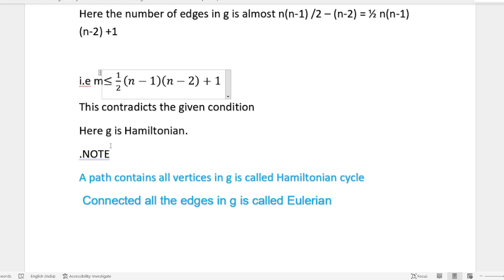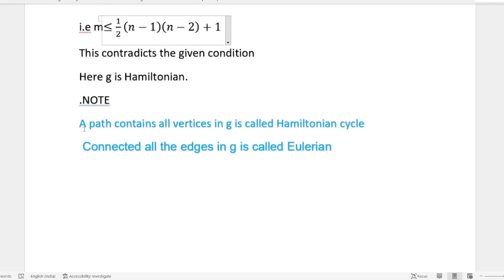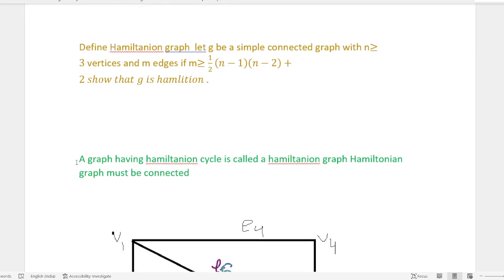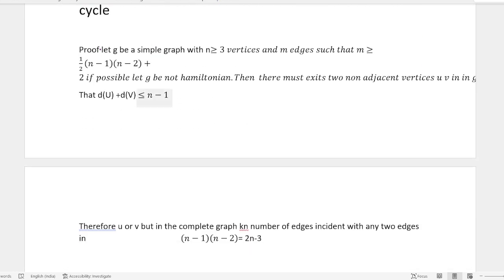Note: A path containing all vertices in G is called Hamiltonian cycle. Connected, all the edges in G is called Eulerian. This question and answer covers all important topics. Thank you, take care, goodbye.